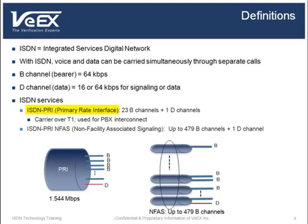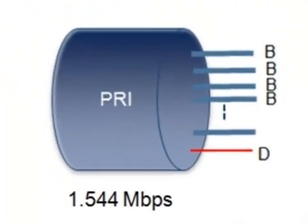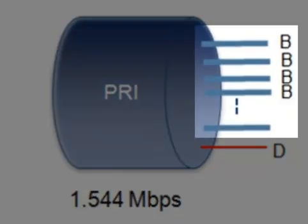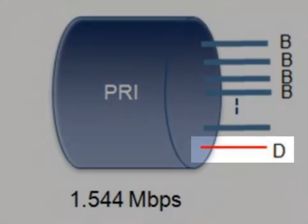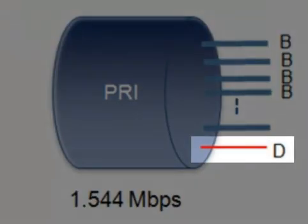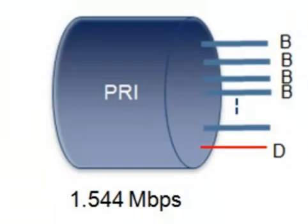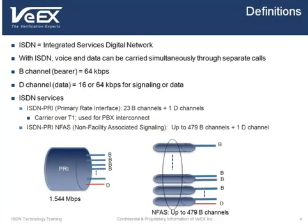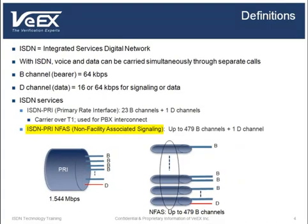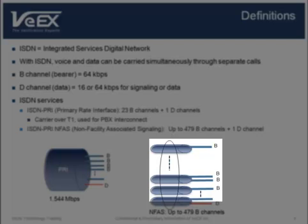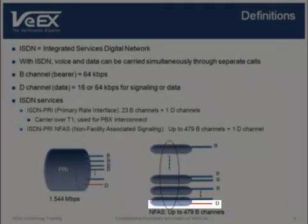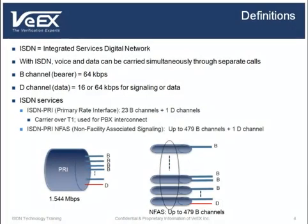PRI is intended for users with greater capacity requirements. In North America, PRI is deployed over a T1 facility. As shown by this graphic, the channel structure is typically 23 B-channels plus one 64 kilobits per second D-channel, for a total of 1536 kilobits per second. Non-facility-associated signaling, or NFAS, is used to control multiple PRI circuits of up to 479 B-channels, along with a single D-channel, in order to allocate more bearer channels to handle higher traffic demands.